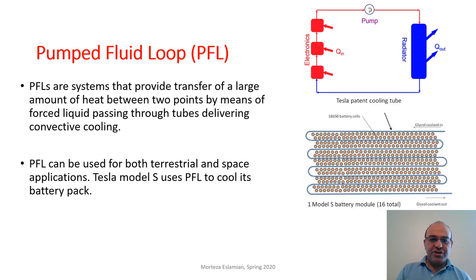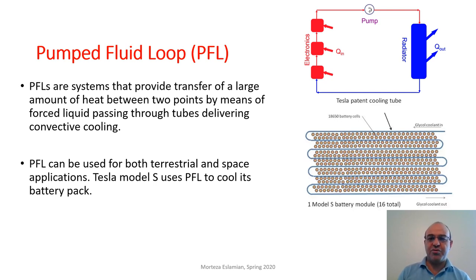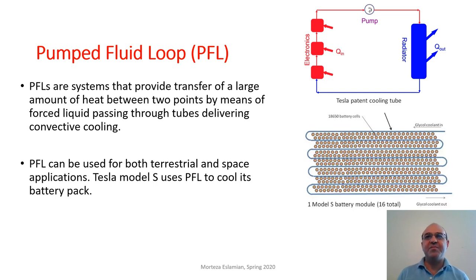A pumped fluid loop is a system that provides transfer of a large amount of heat between two points by means of forced liquid. The liquid is forced by a pump or multiple pumps, passing through tubes and delivering convective cooling. We often say that in space there is no convection, but actually there is no convection outside the components — convection can be present internally.